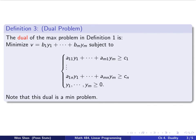Definition 1 is a max problem. Now I have the following. I want to minimize v, which is b1 y1, plus b2 y2, plus all the way to bm ym. Now, y is my variable.